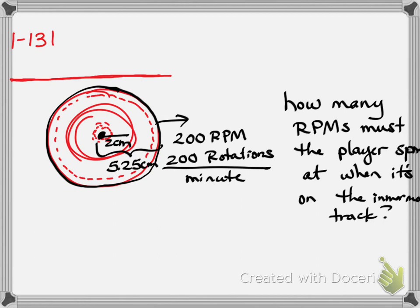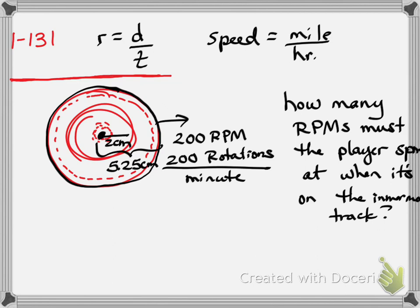We're going to step through this one part at a time. Part A says: what does it mean to have constant linear velocity? Velocity is speed, and constant means the same – it doesn't change. So that means the speed doesn't change. Speed, if you think about miles per hour, is the ratio of distance and time: rate equals D over T. So that ratio doesn't change – it's constant. That's what constant linear velocity means.